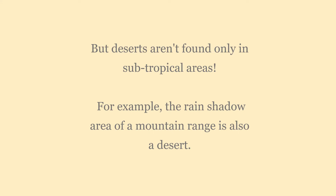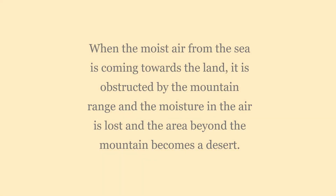But deserts aren't found only in subtropical areas. For example, the rain shadow area of a mountain range is also a desert. When moisture from the sea moves towards the land, it is obstructed by the mountain ranges, the moisture in the air is lost, and the area beyond the mountain becomes a desert.